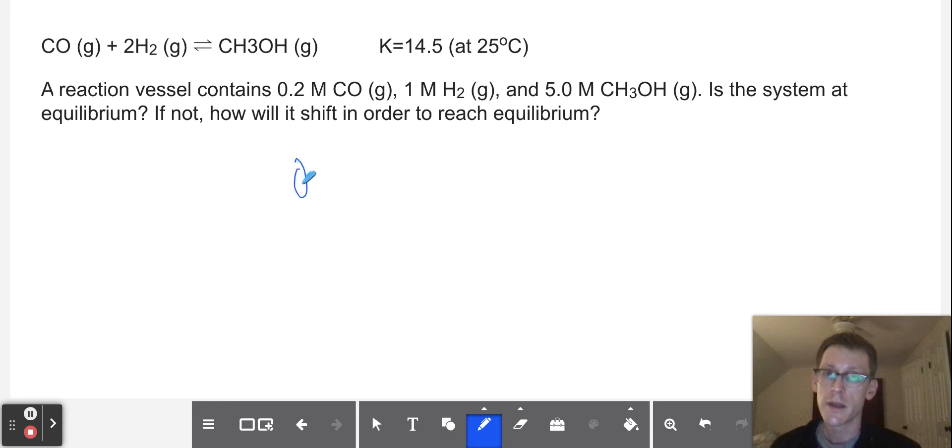So in this case, we're going to say that Q equals, we need products over reactants and everything is a gas. So we have 5.0 molar CH3OH in the numerator. And then in the denominator, we're going to have the concentration of CO, which is 0.2 molar, times the concentration of H2, which is 1 molar squared. So if we multiply these out, what we'll find is that it is 5 over 0.2, which is equal to 25. So Q is equal to 25.